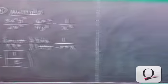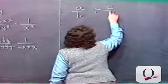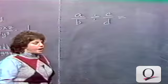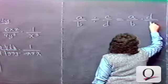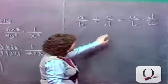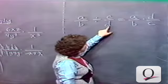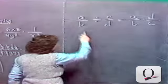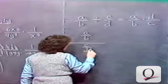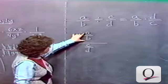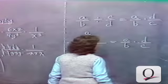To divide fractions a over b divided by c over d, the rule is: invert and multiply — multiply by the reciprocal of the divisor. So a over b divided by c over d equals a over b times d over c. Note that a over b divided by c over d can also be written as a complex fraction; either way the result is the same: a over b times d over c.